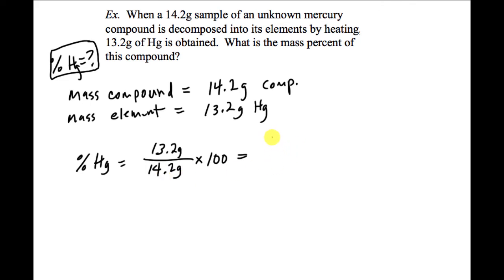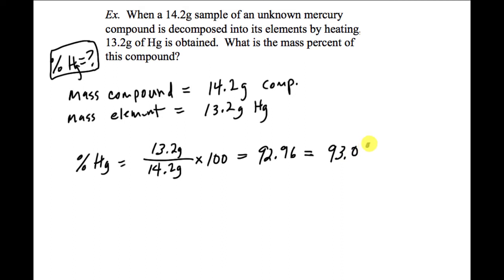Doing the calculation, you should get about 92.96%. Using significant figures — since I have three significant figures — the final answer is 93.0% for the mercury.